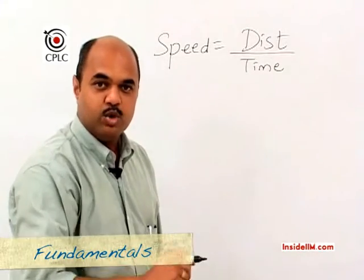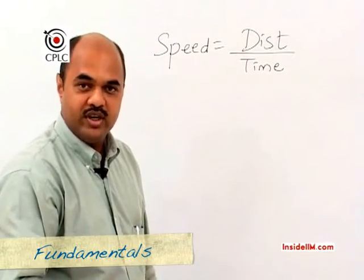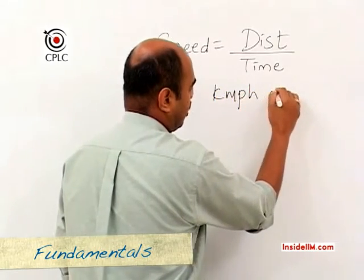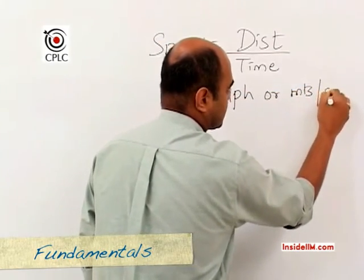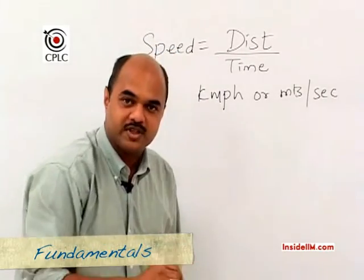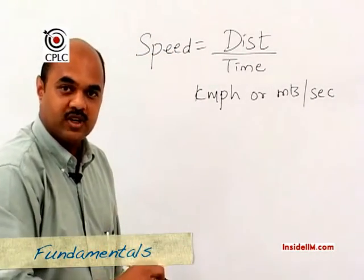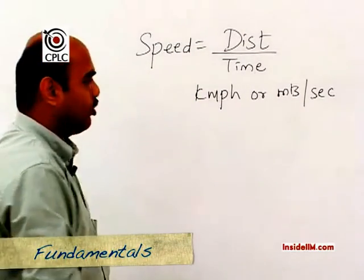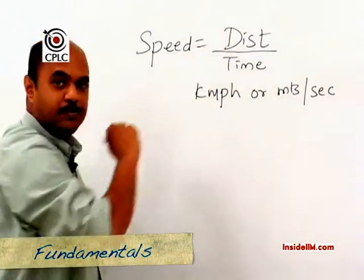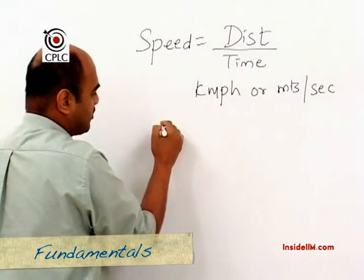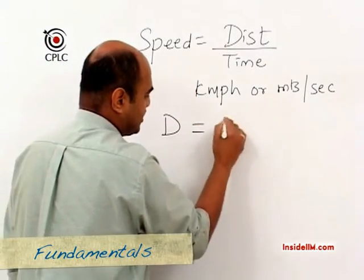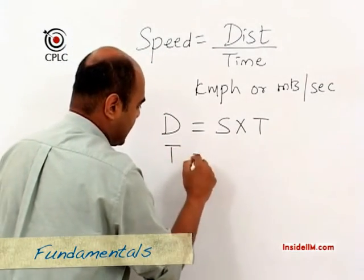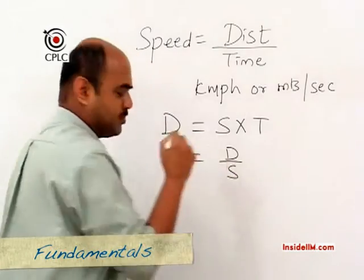The most commonly used units for speed are kilometers per hour or meters per second. Playing around with the formula — since speed equals distance upon time — by cross multiplication we get: distance equals speed multiplied by time, and time equals distance divided by speed.